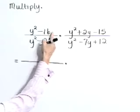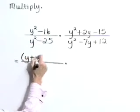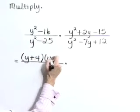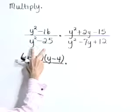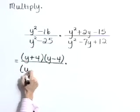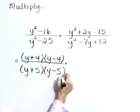Starting with our first numerator, it's a difference of squares and factors as y plus 4 times y minus 4. The denominator is also a difference of squares and factors as y plus 5 times y minus 5.